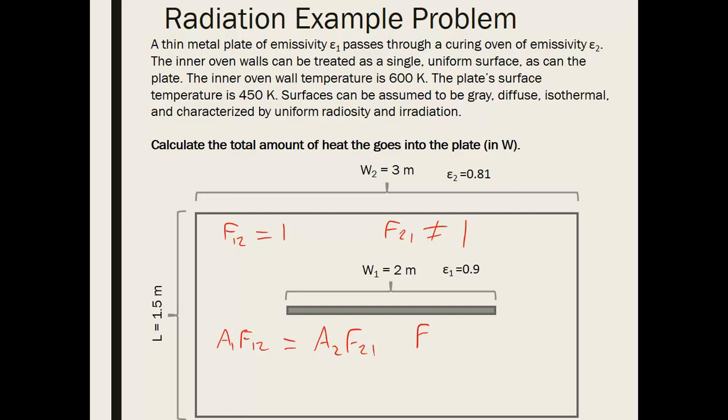We can simplify and find what F21 should be and it'll be a ratio of these two areas. So F21 is going to be equal to A1 over A2 multiplied by F12. So now really the only tricky math part is figuring out what these surface areas are.